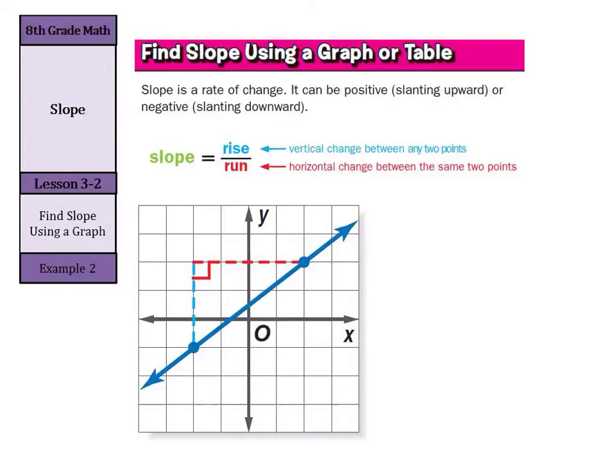Now we can also find a slope using a graph. Again, slope is going to be rise over run. And so when we look at our two points, they are illustrated right there and right there. Slope is going to equal our amount of rise divided by our amount of run.